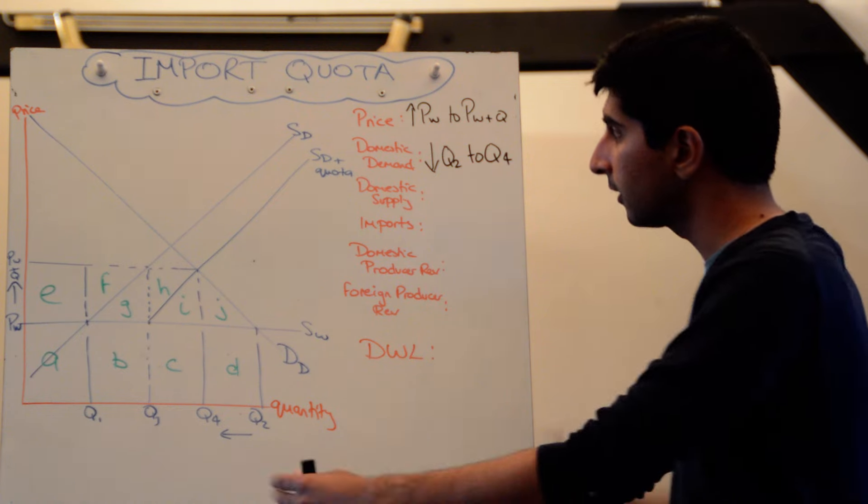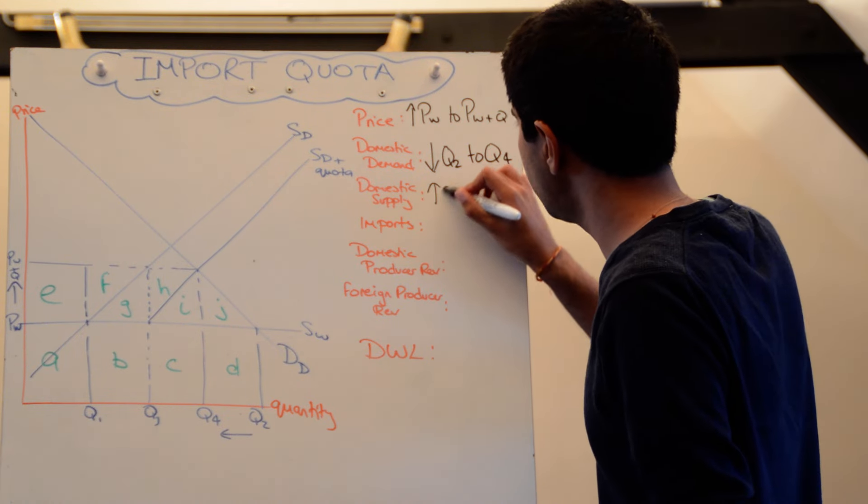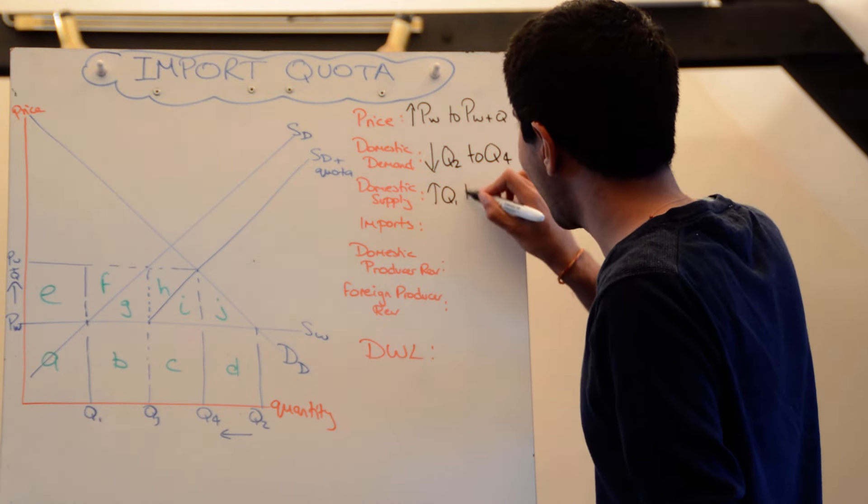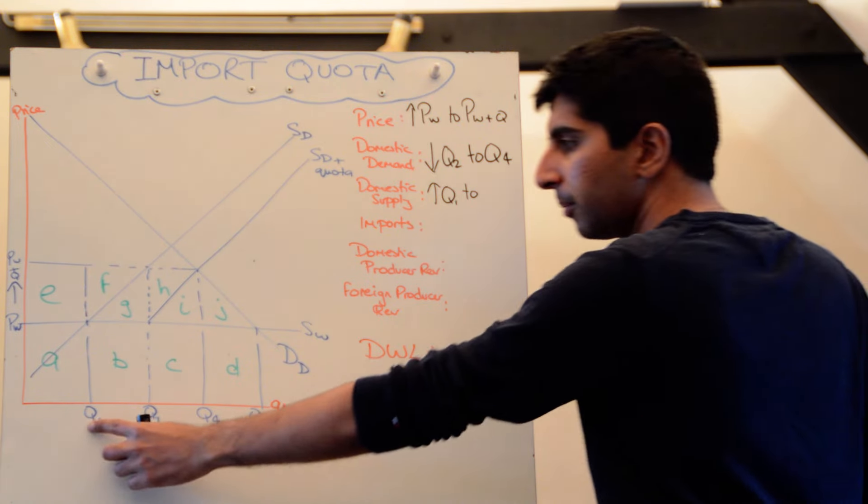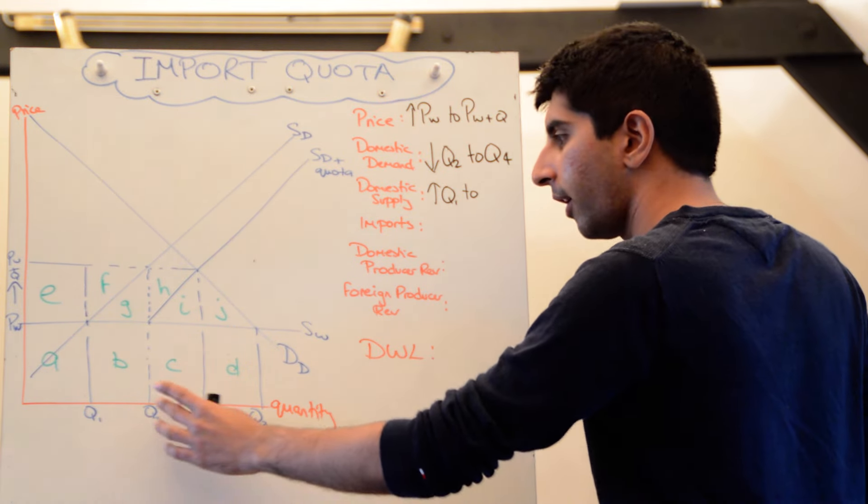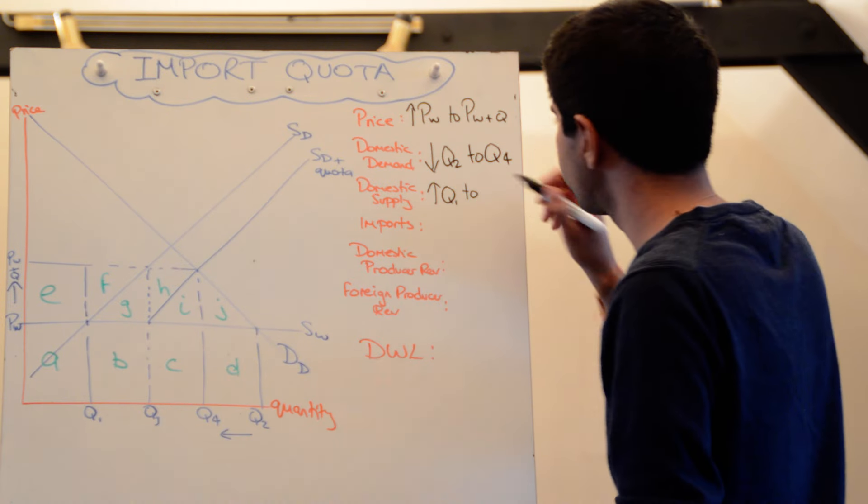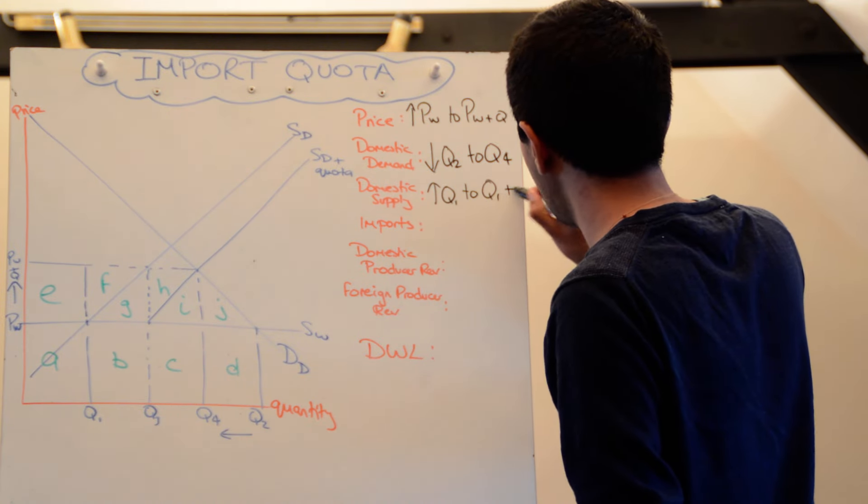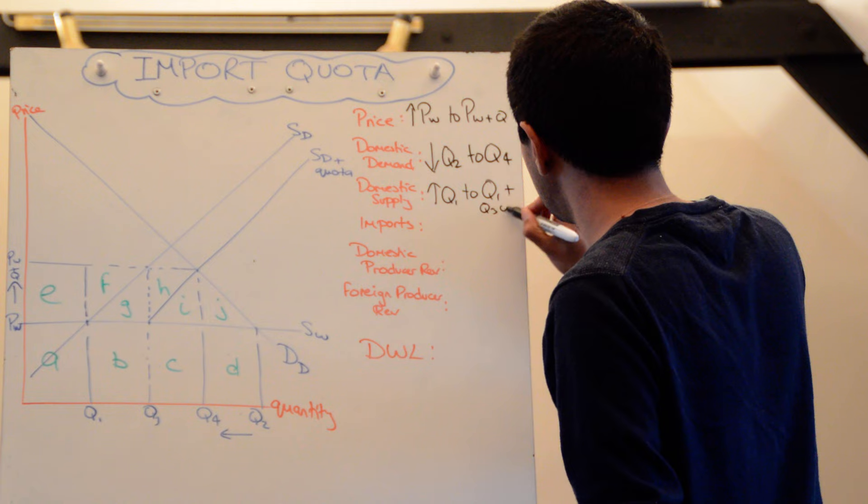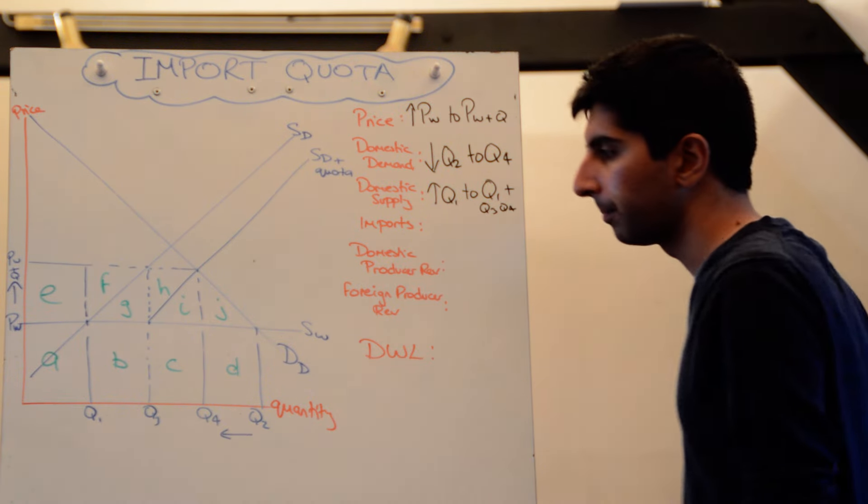Domestic supply has increased. Initially it was Q1. Now, they're still supplying Q1 units, but they're also supplying Q3, Q4. So to Q1 plus Q3, Q4. Alright.